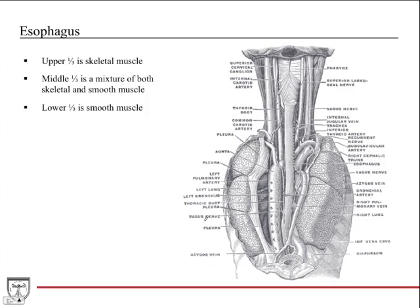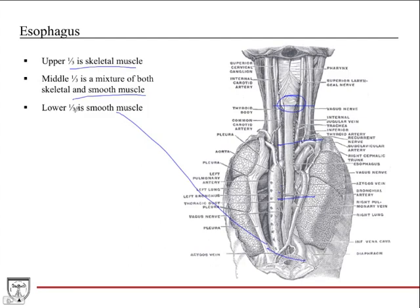The muscle content of the esophagus is commonly tested on anatomy exams. The upper one-third is entirely skeletal muscle, which makes sense because the upper esophageal sphincter is skeletal muscle. The middle third is a mixture of both skeletal and smooth muscle. The lower third is entirely smooth muscle, which makes sense because the lower esophageal sphincter is smooth muscle and that region involves a more involuntary process.